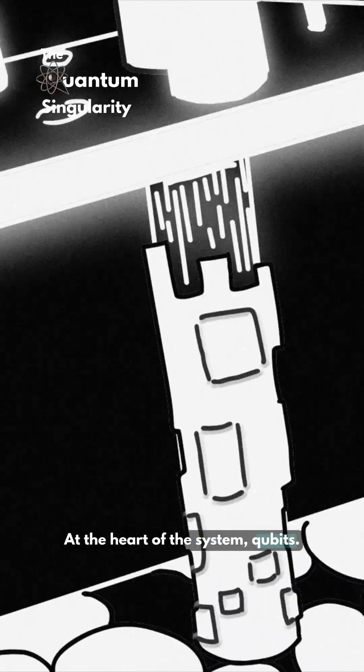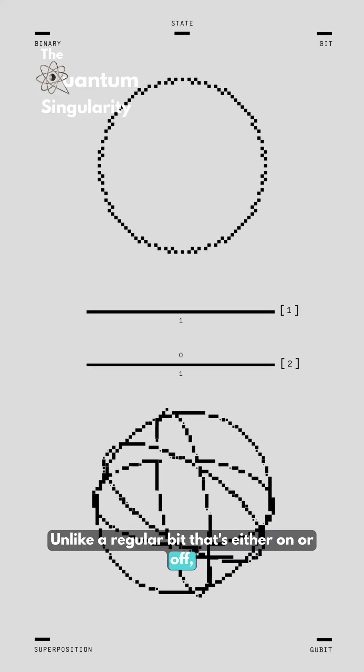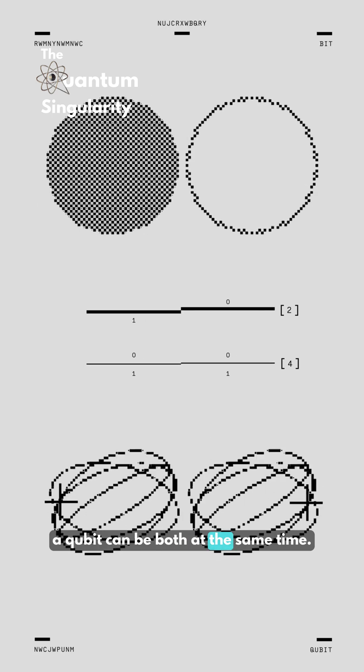At the heart of the system, qubits. Unlike a regular bit that's either on or off, a qubit can be both at the same time.